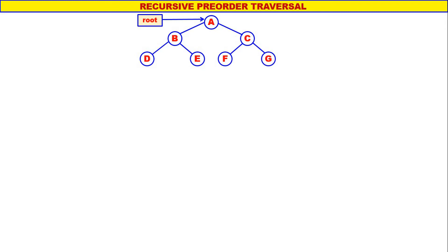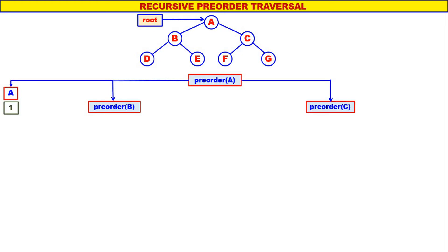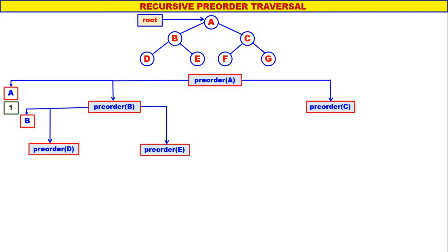A is the root of the tree. We will start with pre-order of A. A is not equal to null, therefore display A. Left of A is B, therefore pre-order of B. Right of A is C, therefore pre-order of C. A is the first one to be displayed. Let us come to pre-order of B. B is not equal to null, therefore display B. Left of B is D, therefore pre-order of D. Right of B is E, therefore pre-order of E. B is the second one to be displayed.